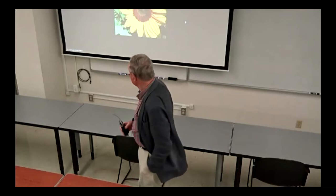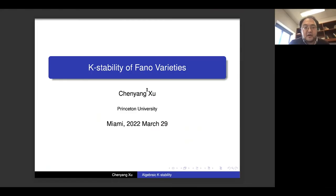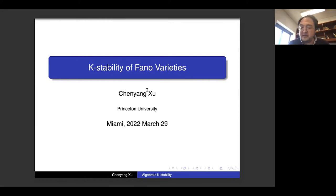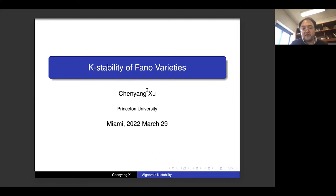Our next talk this afternoon is by Xinjiang Xu from Princeton University, who will talk on K-stability of Fano varieties. This is a conference about Hodge theory, but my talk has little to do with Hodge theory except that philosophically speaking, the program I'm going to describe is somewhat like an analog of the non-abelian Hodge theory — a very non-linear, variety version instead of the bundle version.